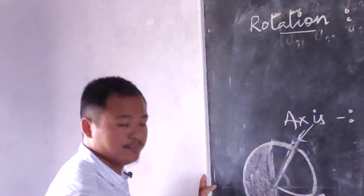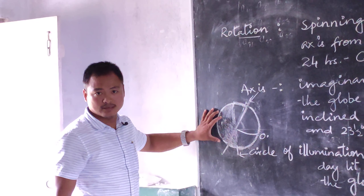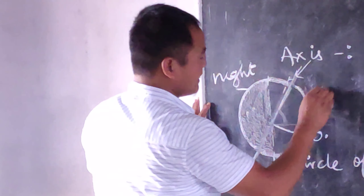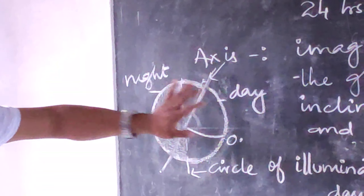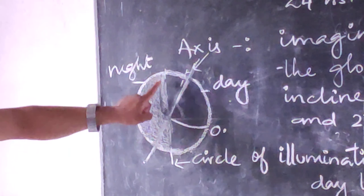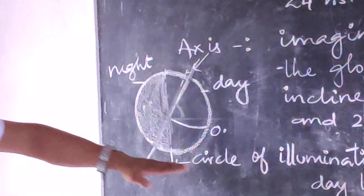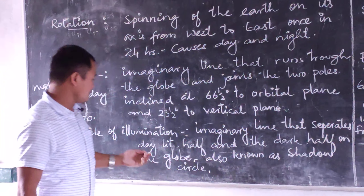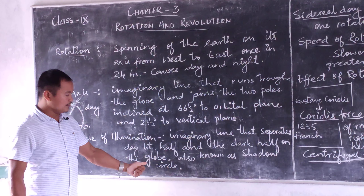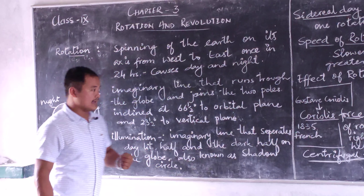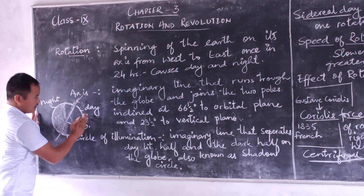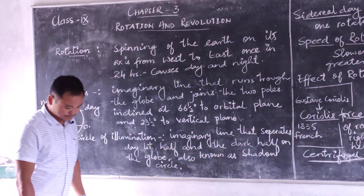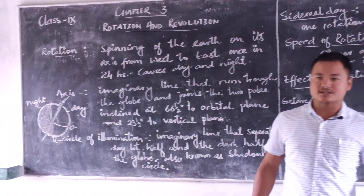As we discussed, rotation causes day and night. On the globe, one portion is unshaded while the other is shaded. The shaded portion represents night and the unshaded portion represents day. These two halves are separated by an imaginary line called the circle of illumination — it separates the daylight half and the dark half on the globe, and is also known as the shadow circle. The part of the earth facing the sun experiences daylight, while the other side, in shadow, experiences night.